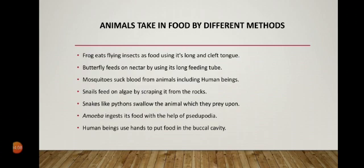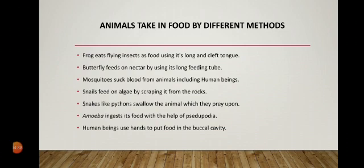Mosquitoes feed on blood from other animals, including human beings. Infants of humans and many other animals such as cows and dogs feed on mother's milk by sucking. Snails feed on algae — a very small plant — by scraping it from rocks.